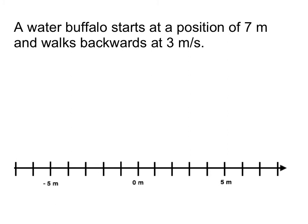So here we've got a water buffalo that starts at a position of seven meters and it walks backwards at three meters per second. So let's place a dot at our initial position of seven meters. So here we go, seven meters. And you want to indicate to me that this is where it starts, so that's where it is at zero seconds.